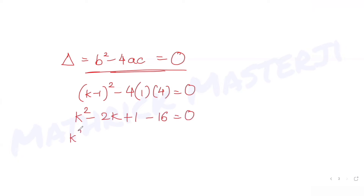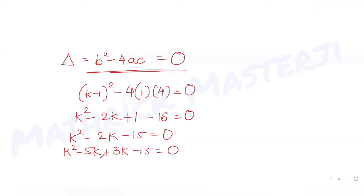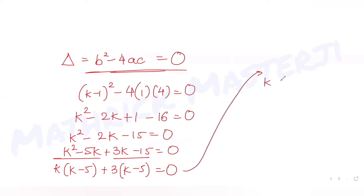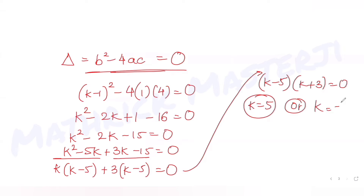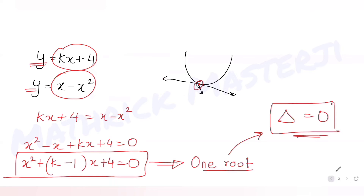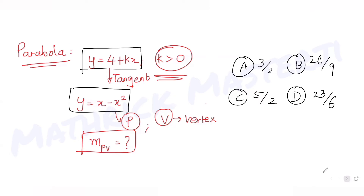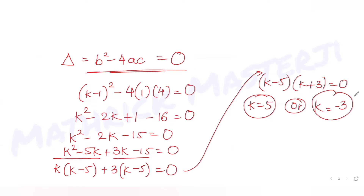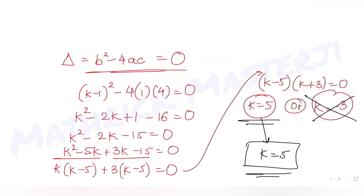Expanding gives k squared minus 2k plus 1 minus 16 equals zero, so k squared minus 2k minus 15 equals zero. Factoring: (k minus 5)(k plus 3) equals zero, giving k = 5 or k = -3. Since k must be positive, k equals 5.